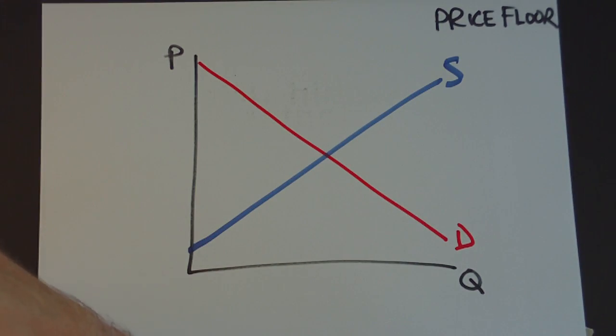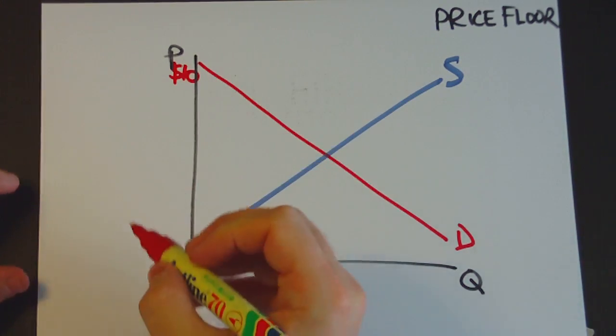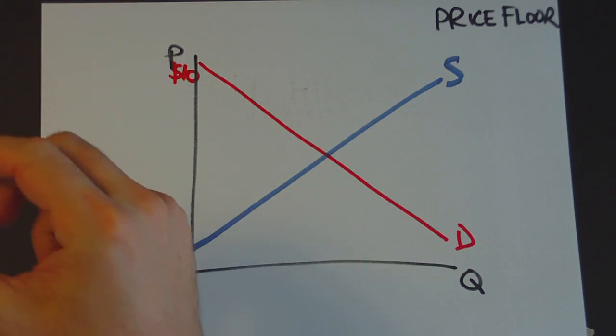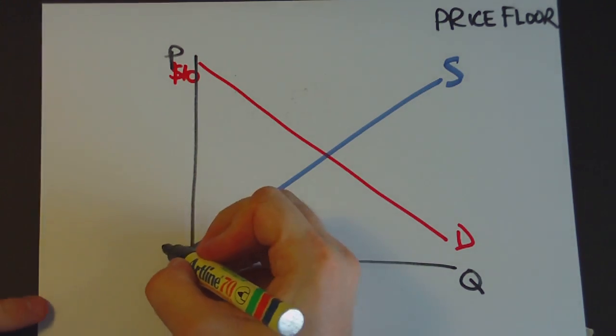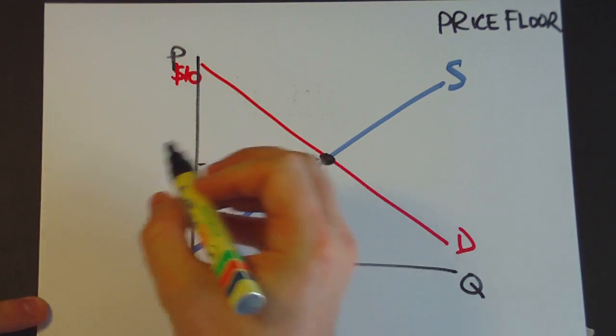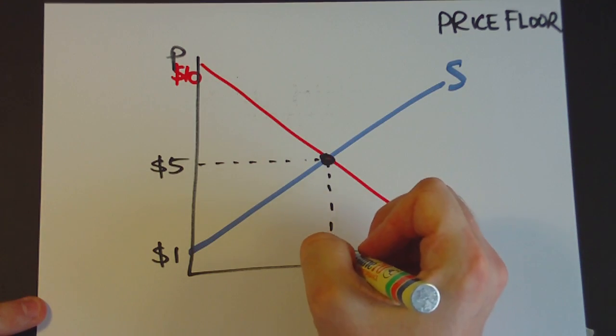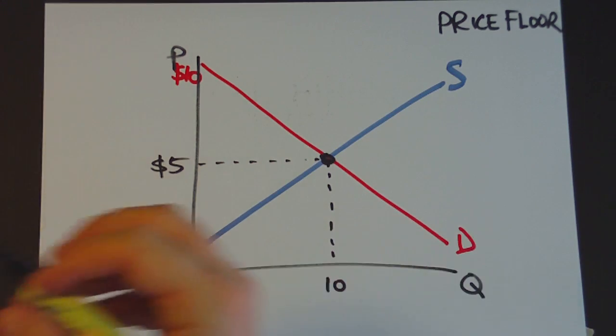And just to make it the same as the last example, let's assume that it intersects at $10 here, that it intersects at $1 here, and the market equilibrium is at $5 over here, the price and a quantity of 10.